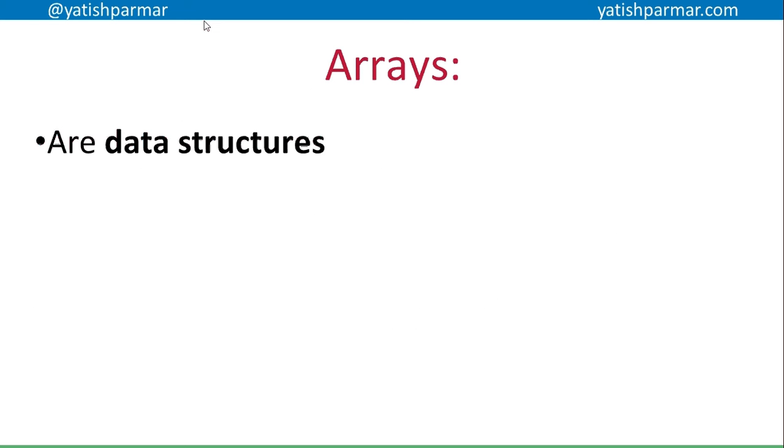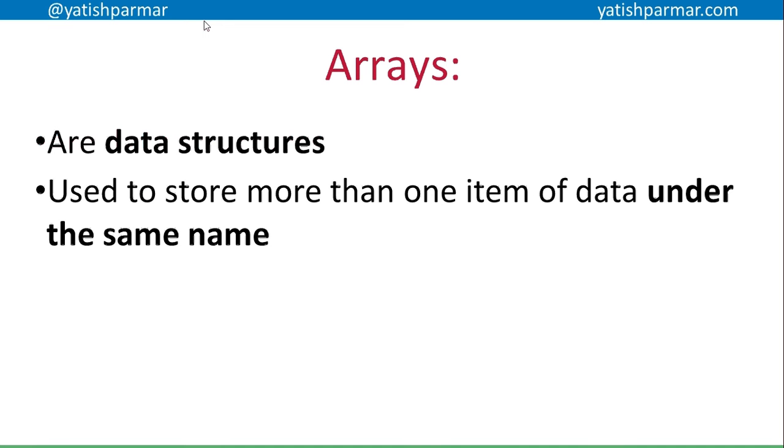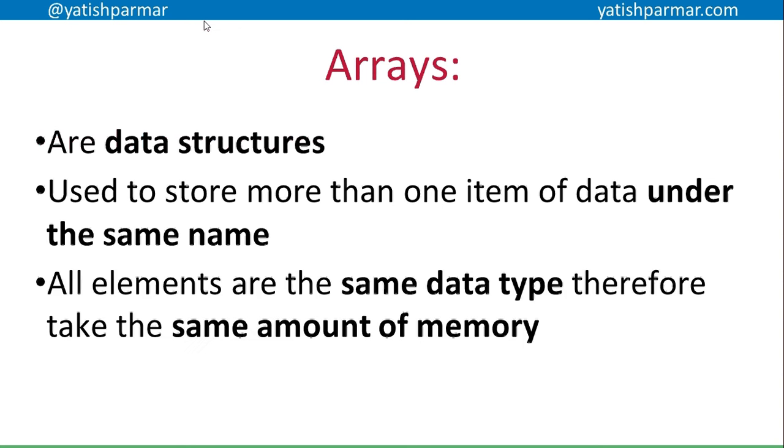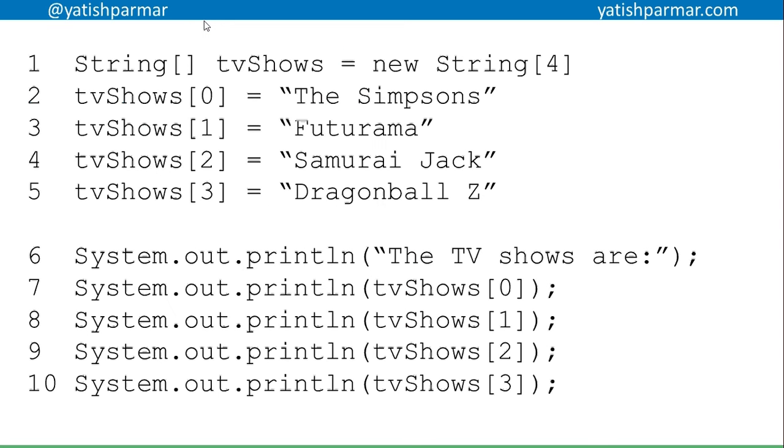What we can use instead is an array. An array is a data structure, so instead of having individual variables, we're organizing them in a structure. We're storing more than one item of data under the same name - a single name to access multiple items of data. All elements are of the same data type, therefore taking the same amount of memory. These three points basically define what an array is.